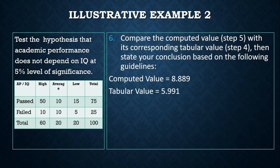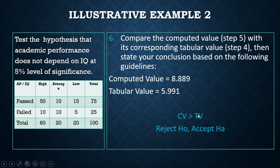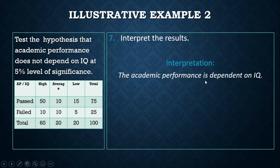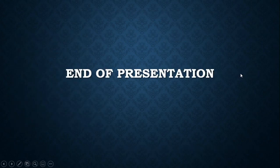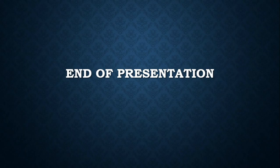The computed value of 8.889 is greater than the tabular value of 5.991. Therefore, we accept the alternative hypothesis. The interpretation: academic performance is dependent on IQ. That ends our discussions for the testing of hypothesis. The notes and copies for the critical values, as well as the PowerPoint presentation for the introduction, will be given to you. Thank you for listening.